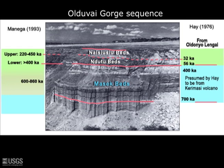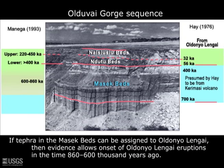The critical question is whether the tephra and the sedimentary Masek beds should also be assigned to Ol Doinyo Lengai and not some other volcano. If that's the case, as we suspect, then the Olduvai Gorge evidence allows onset of Ol Doinyo Lengai in the time range 860,000 to 600,000 years ago.